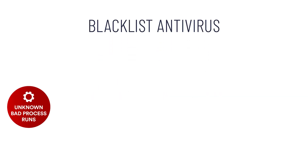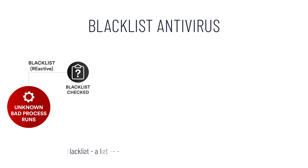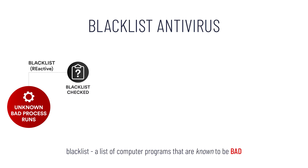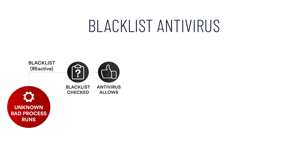The process starts when a user opens a new or unknown malicious application. The antivirus software checks to see if the application in question is on the blacklist, which is a list of programs that are known to be bad. Since new and unknown programs are not on the blacklist, the antivirus software allows the application to run, which results in the device becoming infected.